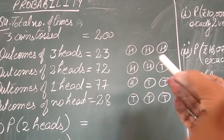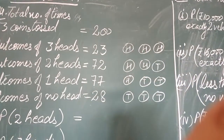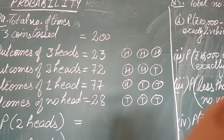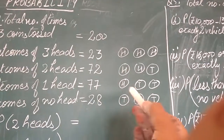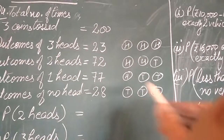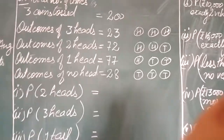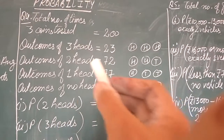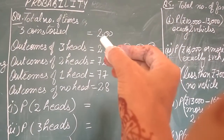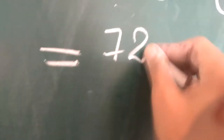If I ask you how many times no tail appears — no tail means all 3 heads, that is 23. How many times does 1 tail appear? 1 tail means 2 heads on 2 coins, that is 72. For 2 tails, 1 head — 77 times. For 3 tails, no head — 28 times. Now, probability of 2 heads: how many times did 2 heads appear? 72. So we write 72 divided by 200.